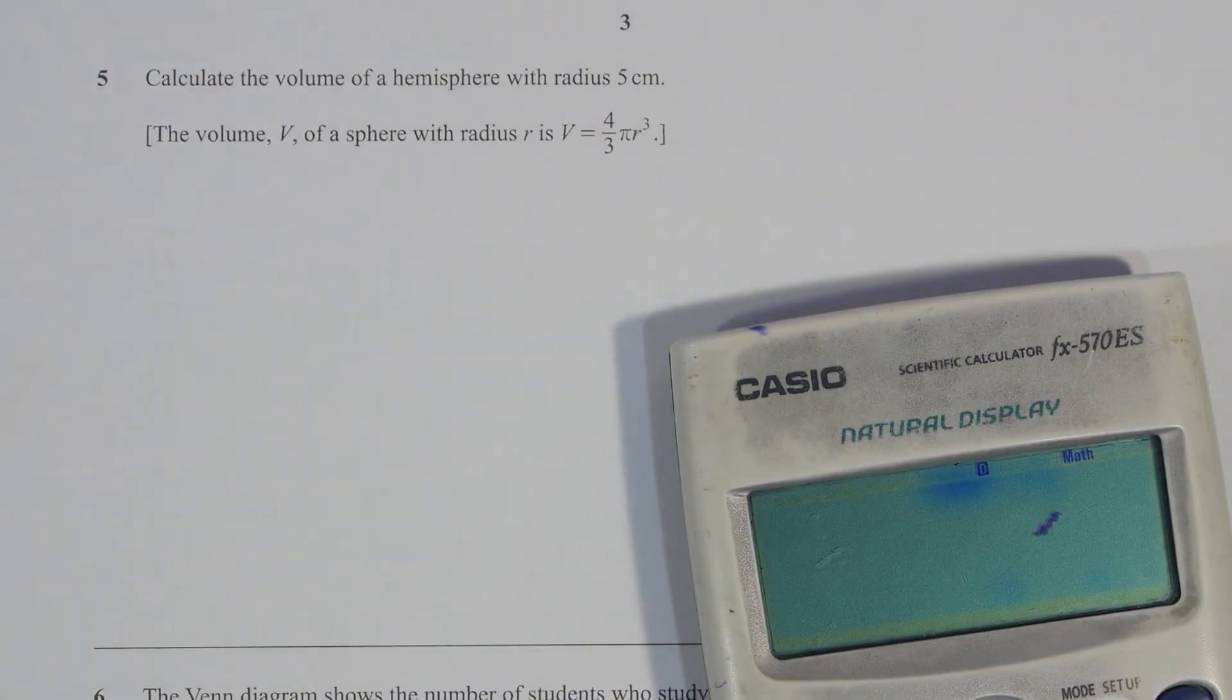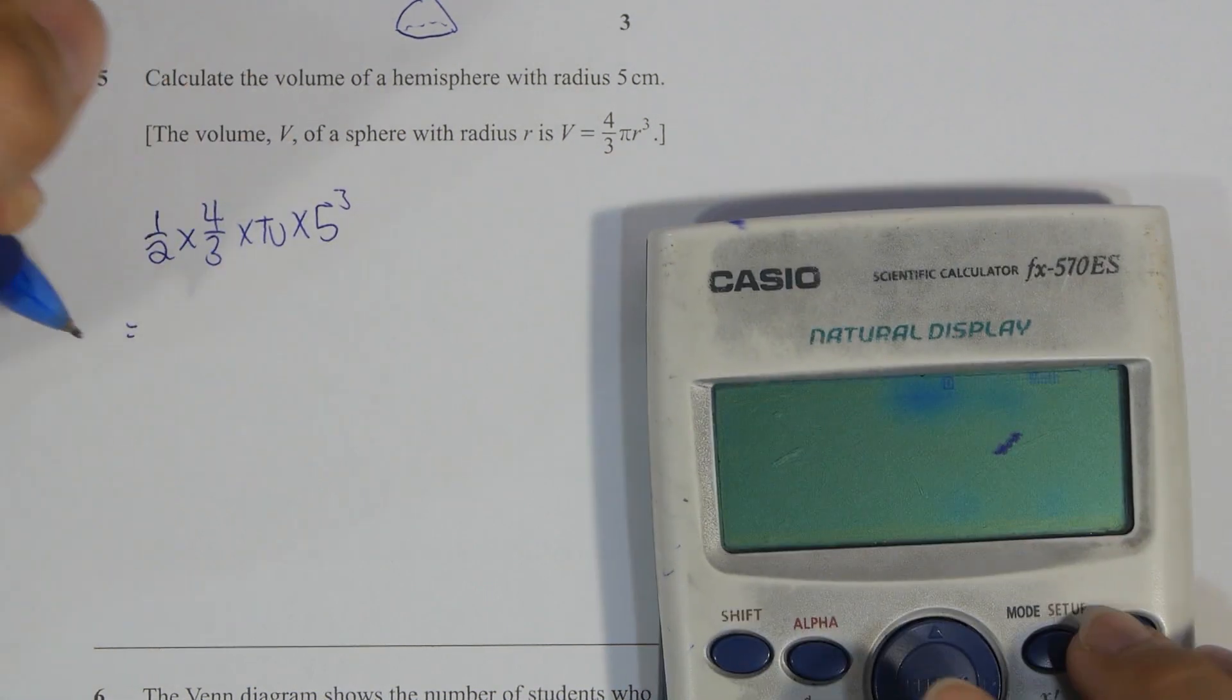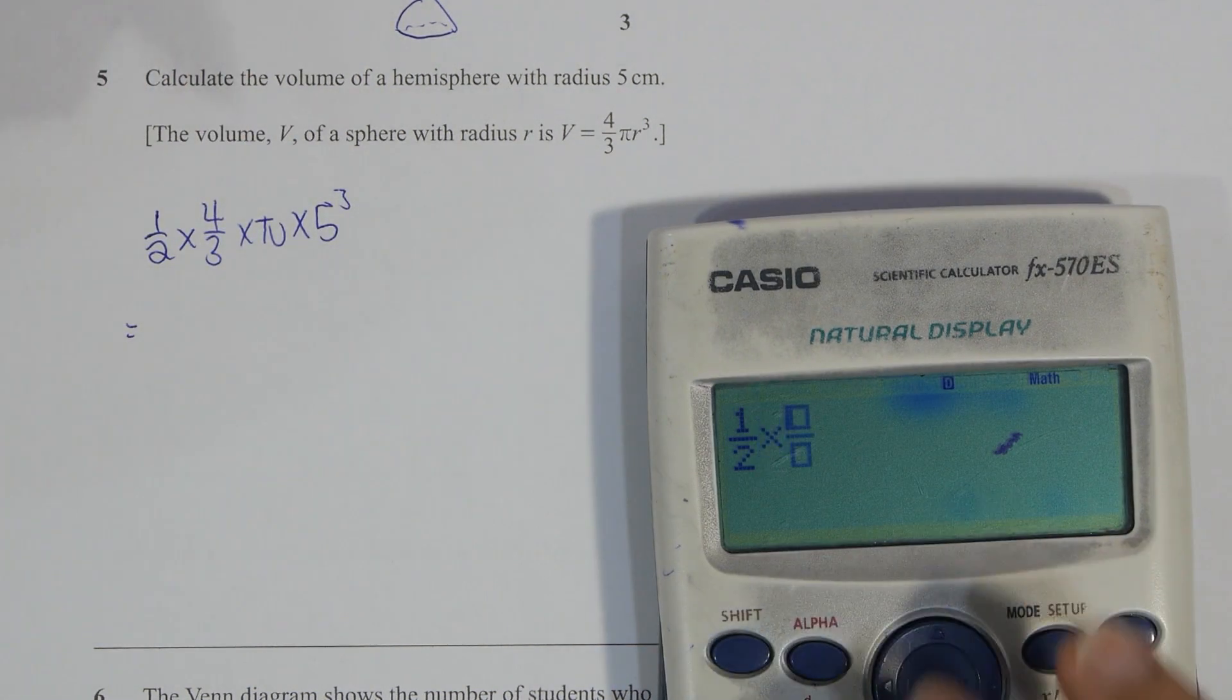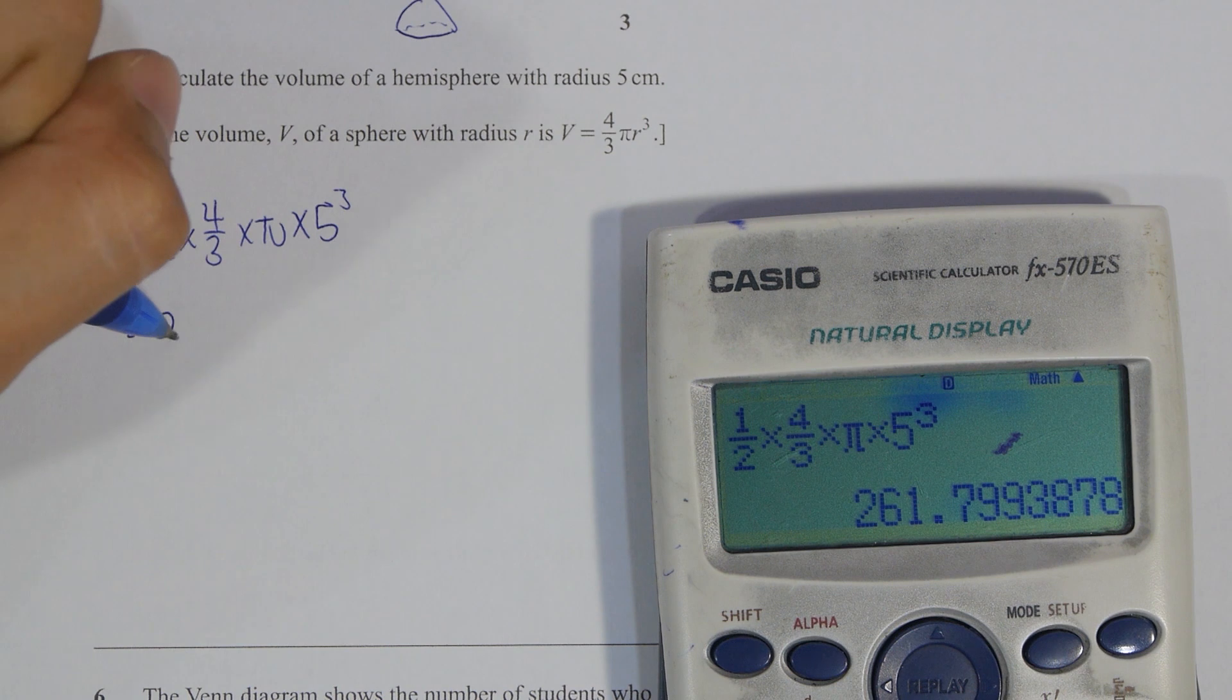For number five, keyword here is hemisphere. For the formula that we are using, which is 4 over 3 times pi times r cubed, you are required to multiply it by half. So after you run the calculation, you get the results as 261.80.